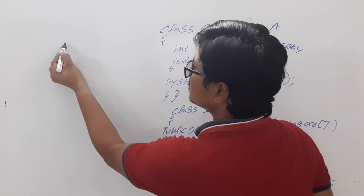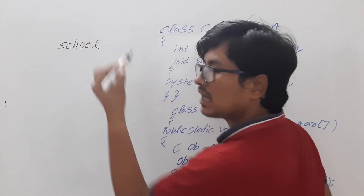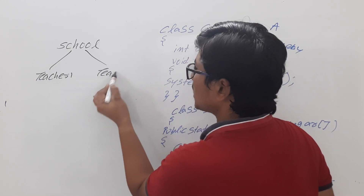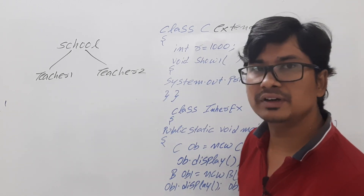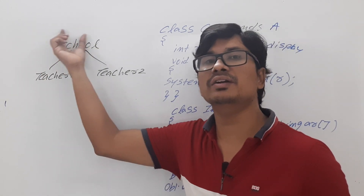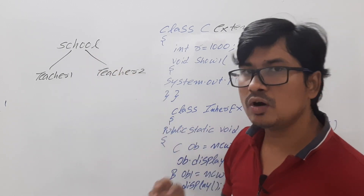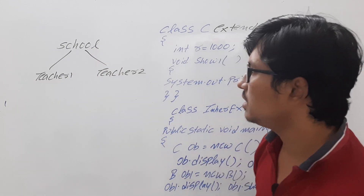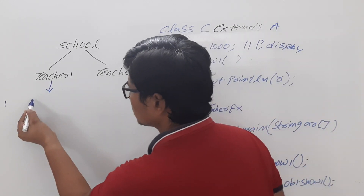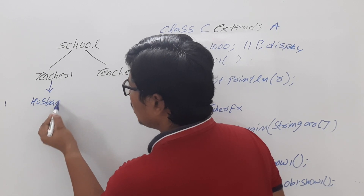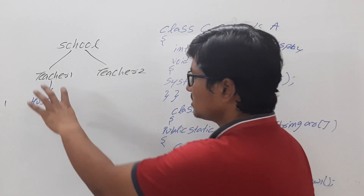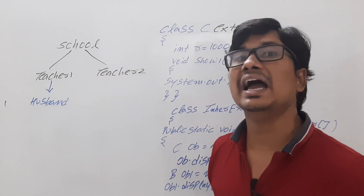For hybrid inheritance, consider a school class as parent. From school class there are two child classes: teacher one and teacher two — this is hierarchical inheritance. Teacher one also has a husband class inheriting from it — that's single level inheritance. So you have a combination of hierarchical and single level inheritance, which is an example of hybrid inheritance.